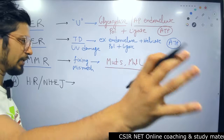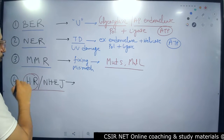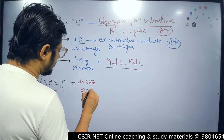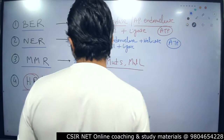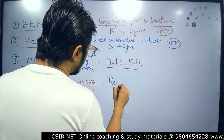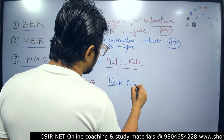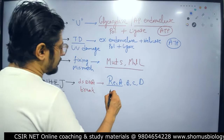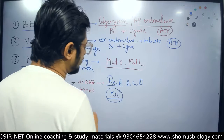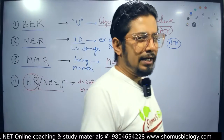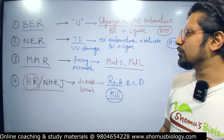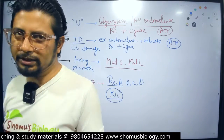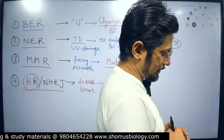In Homologous Recombination, there is a double-stranded DNA break that we fix using RecA, RecB, RecC, RecD — the RecBCD model used in E. coli and similar systems. In Non-Homologous End Joining, we need Ku proteins, Artemis, and other sets of proteins. All of these — Methyl Mismatch Repair, Homologous Recombination, and the others — need energy to fix the DNA errors.